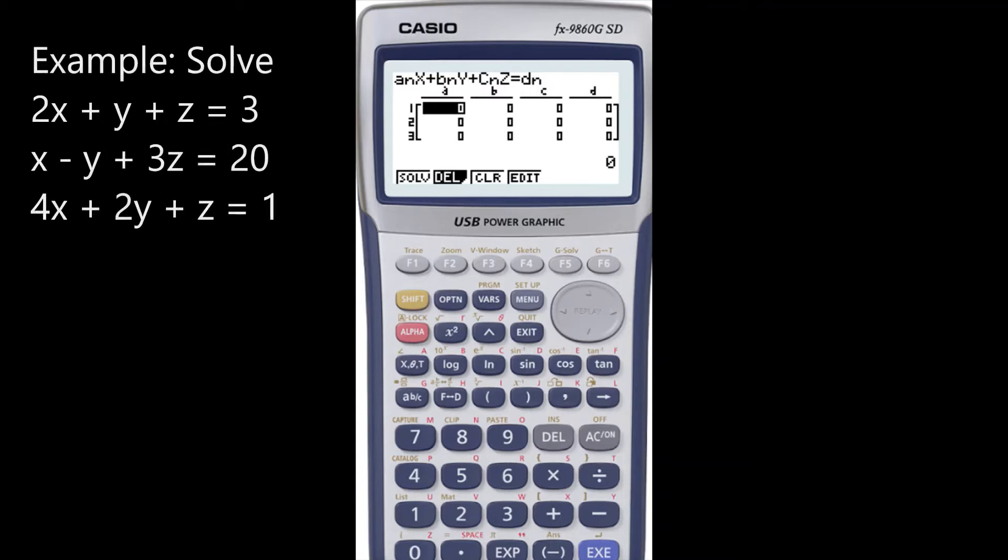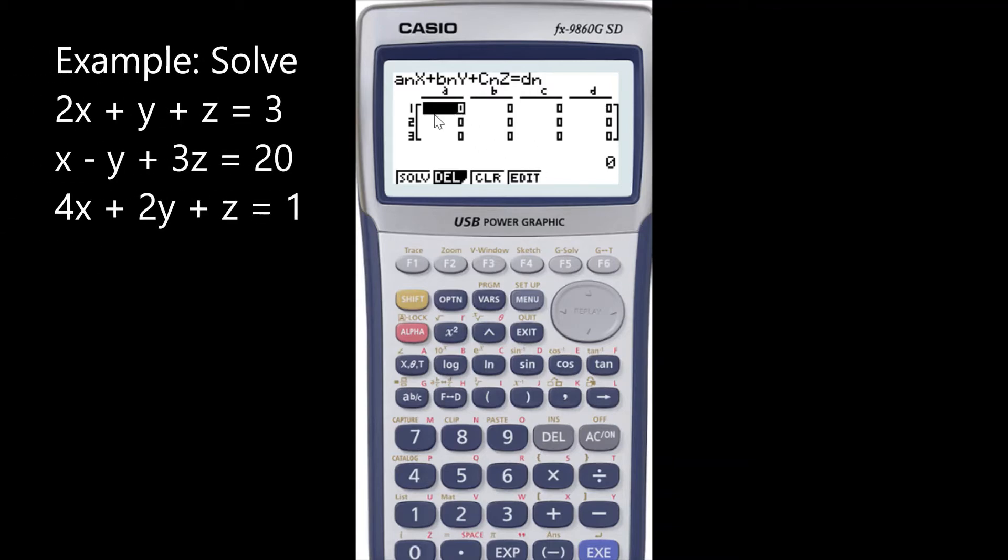Now we will enter the equations. What we need is the coefficients of X, Y, and Z. The first equation was 2X plus Y plus Z is equal to 3.